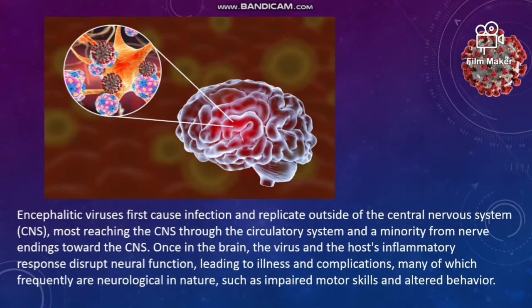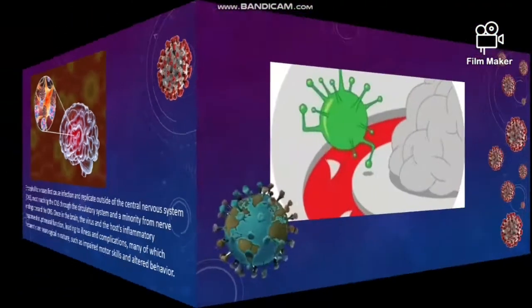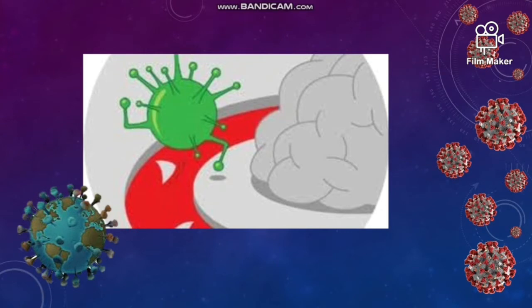Encephalitis viruses first cause infection and replicate outside of the central nervous system. Most reach the CNS through the circulatory system, and a minority from the nerve endings toward the CNS. Once in the brain, the virus and the host inflammatory response disrupt neural function, leading to illness and complications — many of which are neurological in nature, such as impaired motor skills and altered behavior. For viral encephalitis, the virus must pass through our blood-brain barrier.